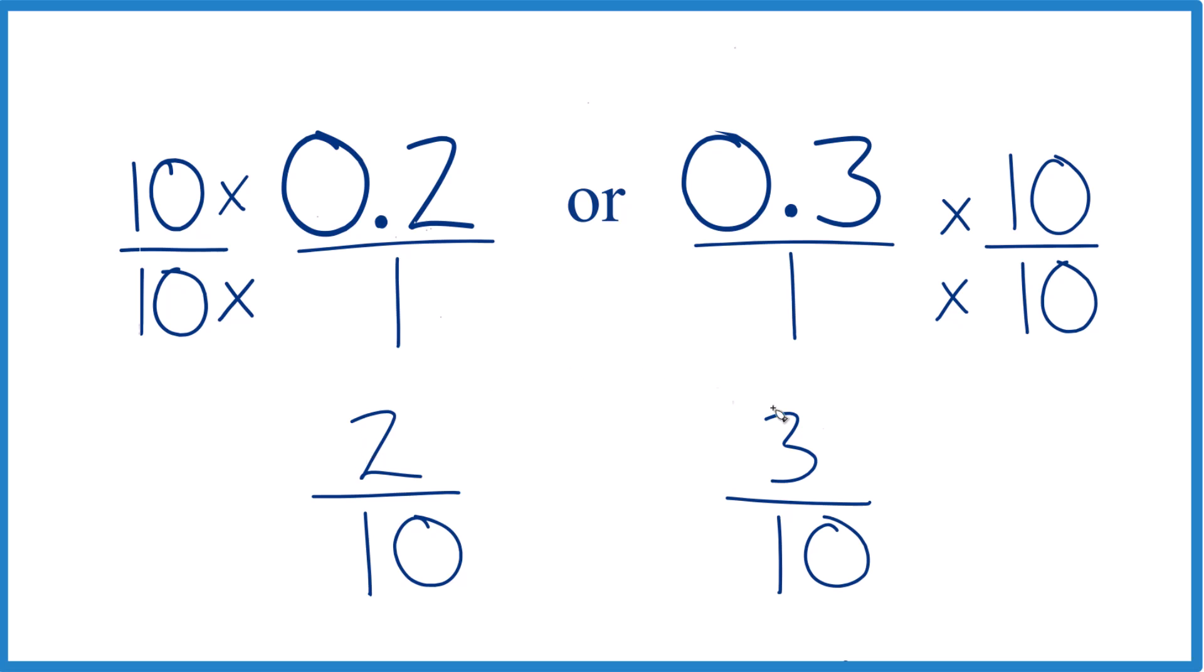3 is greater than 2, so 3 tenths is greater than 2 tenths. And like we found before, 0.3, that's greater than 0.2. It's Dr. B. Thanks for watchin'.